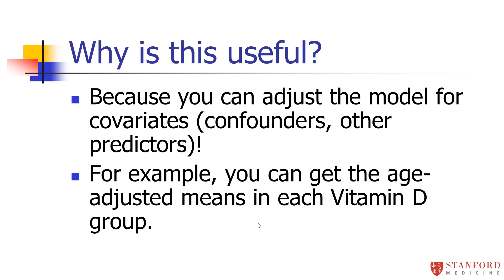Again, why is this useful? We're just getting back out the means. It doesn't seem all that interesting. But it's useful because we can then throw other things into the multivariate regression model to adjust for those covariates and confounders or to get better predictions.